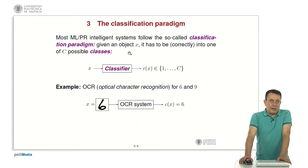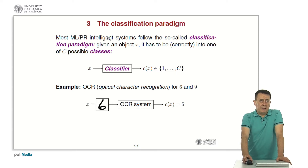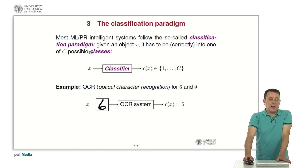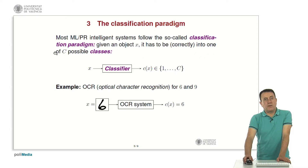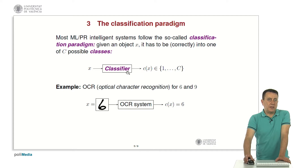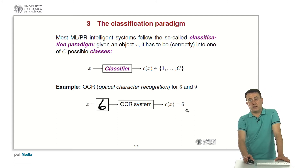How can these systems be described formally? In essence, they follow the classification paradigm. This paradigm says: given an object X, it has to be correctly classified into one of capital C possible classes. The classes are defined as a finite set of labels, for instance one to C. The object is given as input to a classifier and the classifier returns its class. For example, in OCR optical character recognition, digits four, six, and nine are written, and the OCR system has to guess which digit it is — in this case, six.